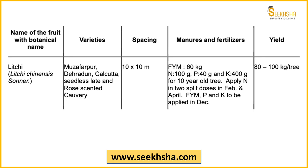Important litchi varieties include Muzaffarpur, Dehradun, Calcutta, seedless, late rose scented, and cowberry. The spacing for litchi is 10x10 meters. Yield is 80–100 kg per tree. These are some important points from minor horticulture crops.